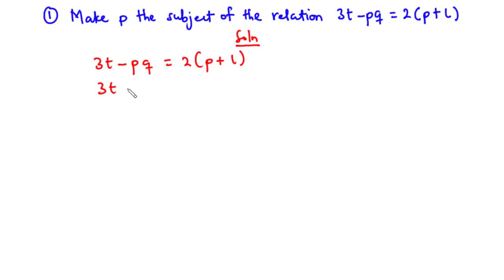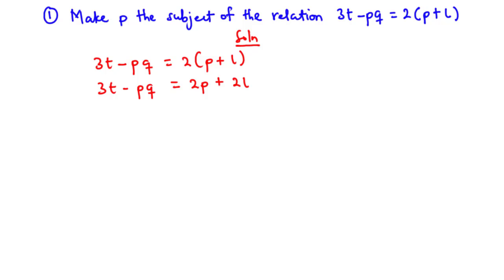Expanding the right hand side: 3t minus pq equals 2p plus 2l. Now we group terms containing p on one side of the equation. Transposing negative pq to the right hand side and 2l to the left hand side gives 3t minus 2l equals 2p plus pq. We now have all terms containing p on one side.